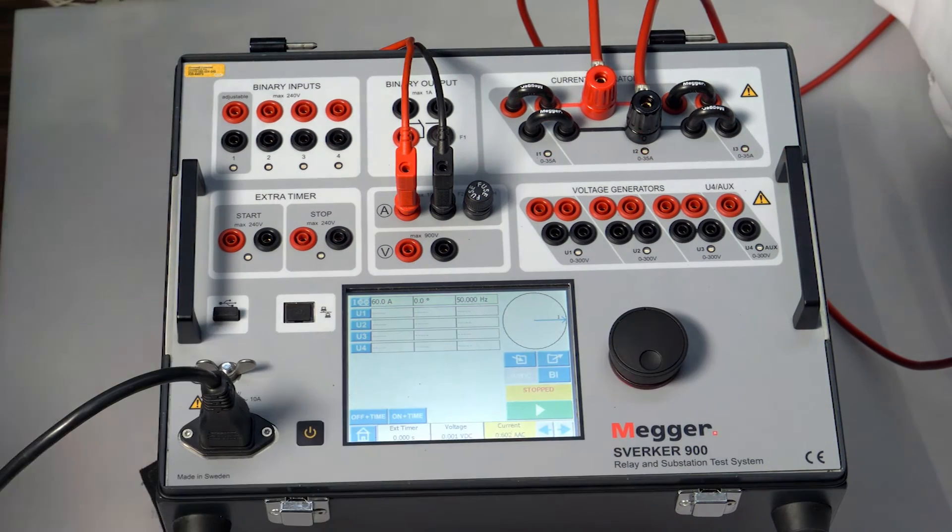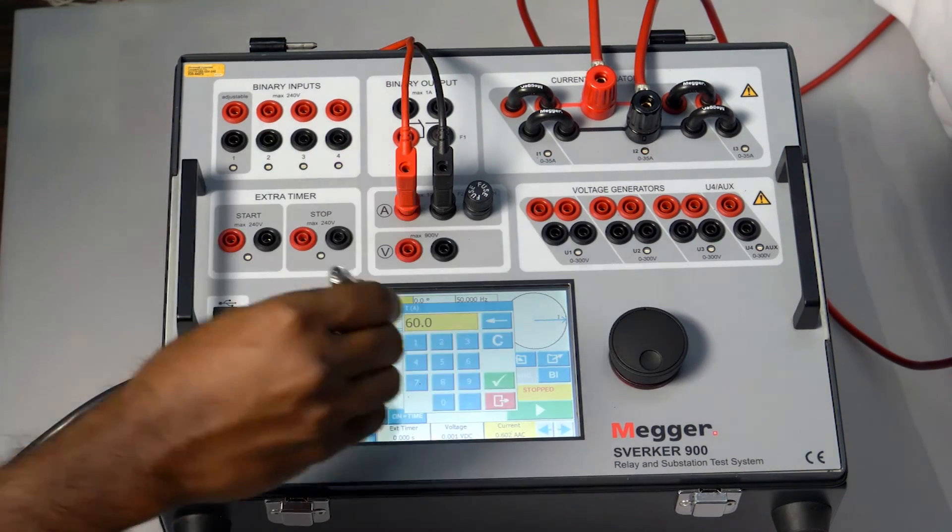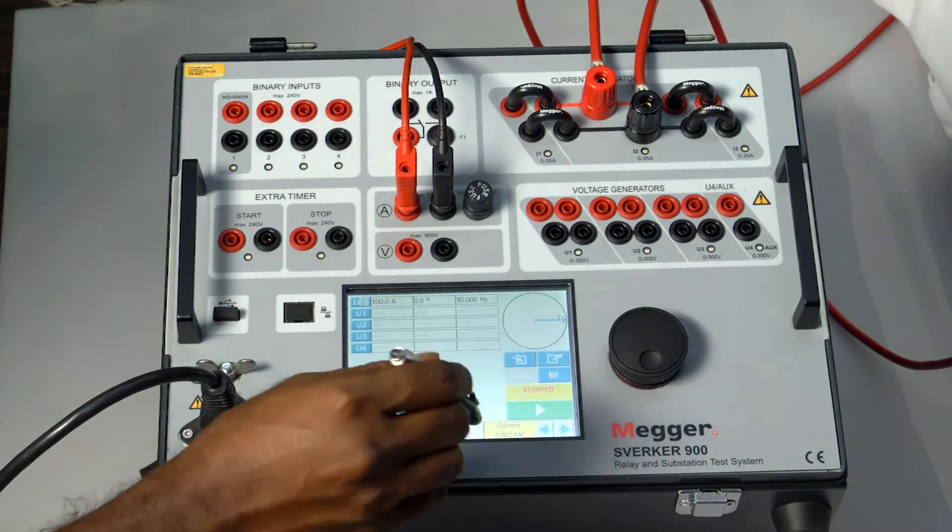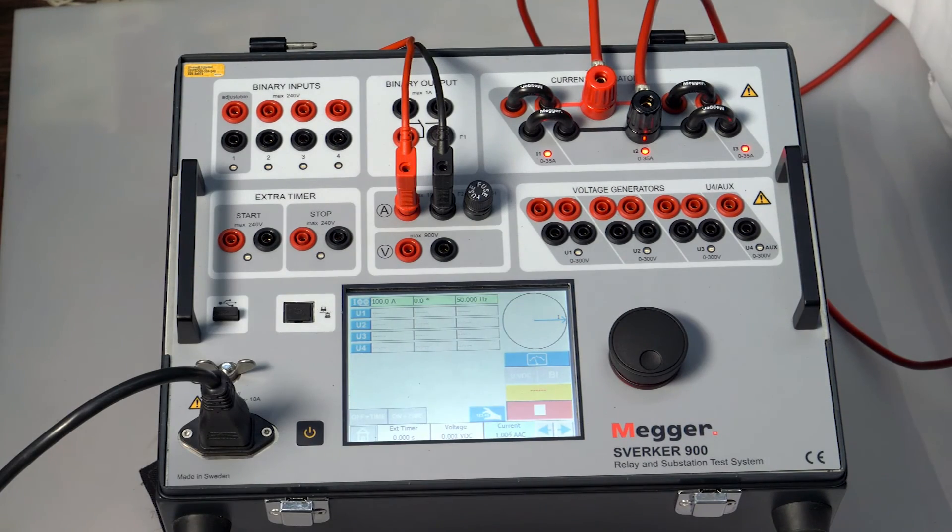80 amps, 0.8 is calculated. 0.803 is the measured one. And the full load current 100 amps, 1 amp is calculated value. And the measured is 1.005.